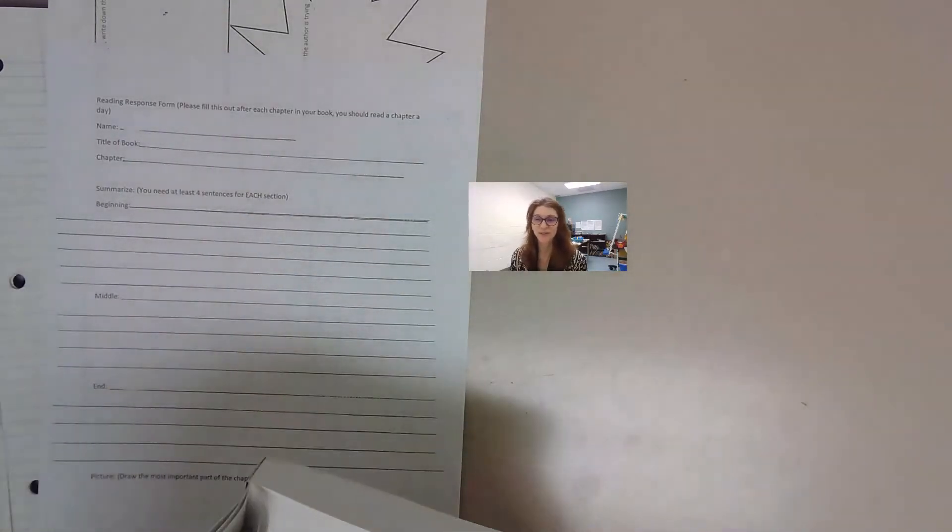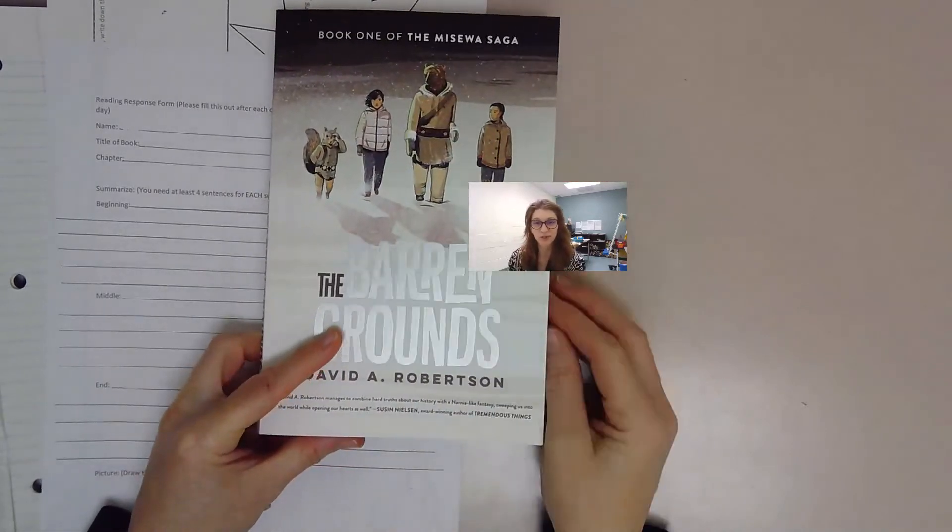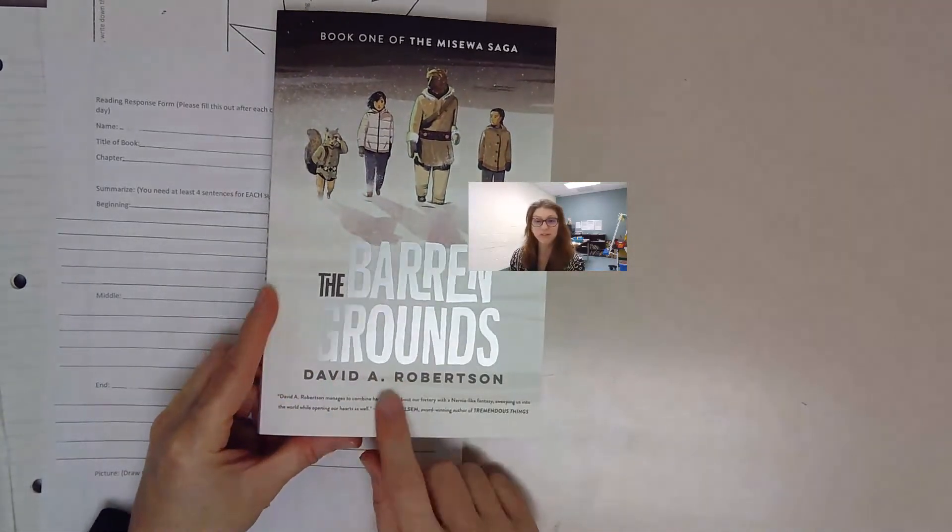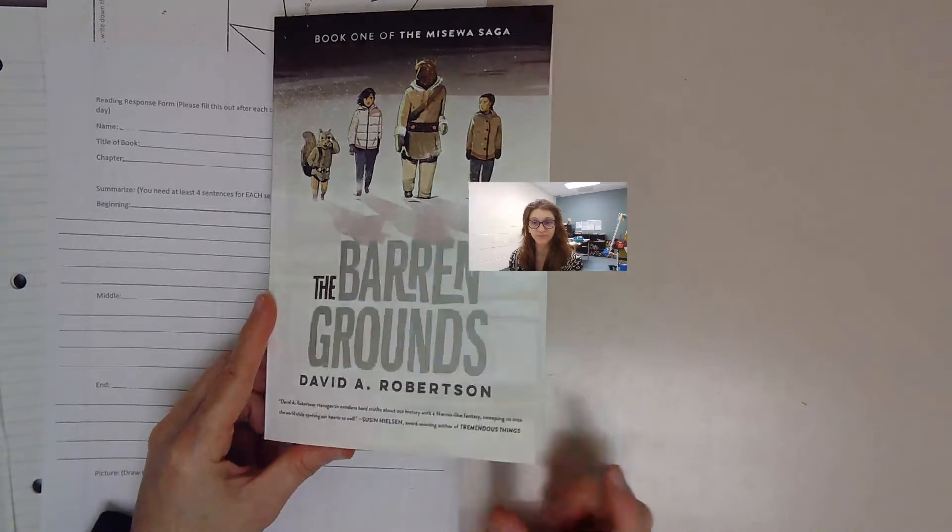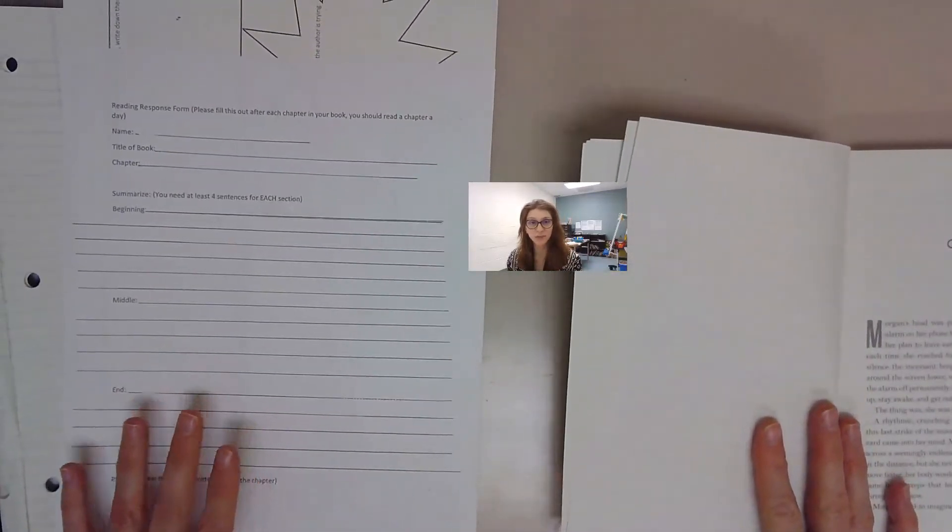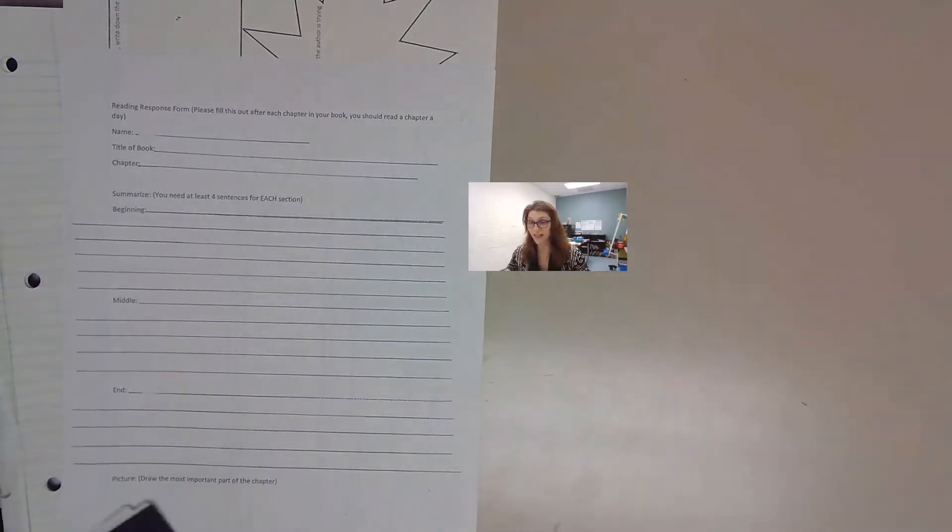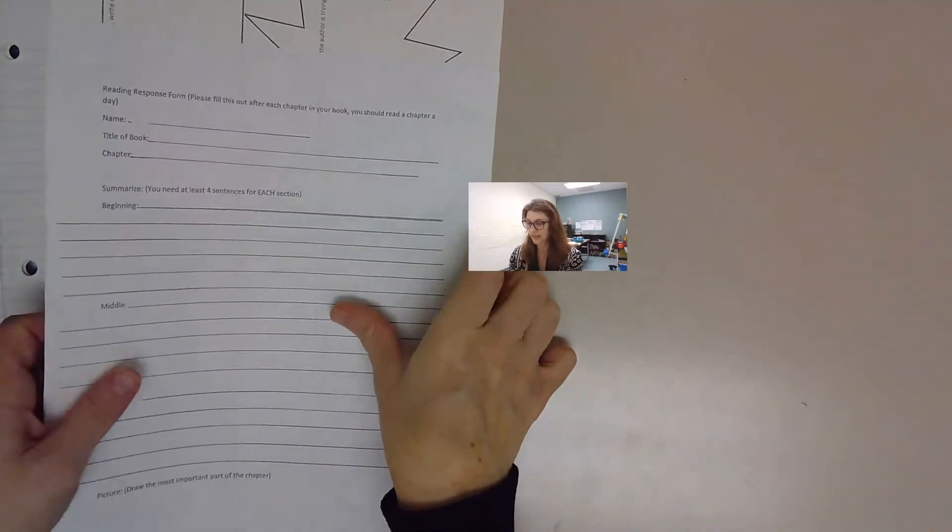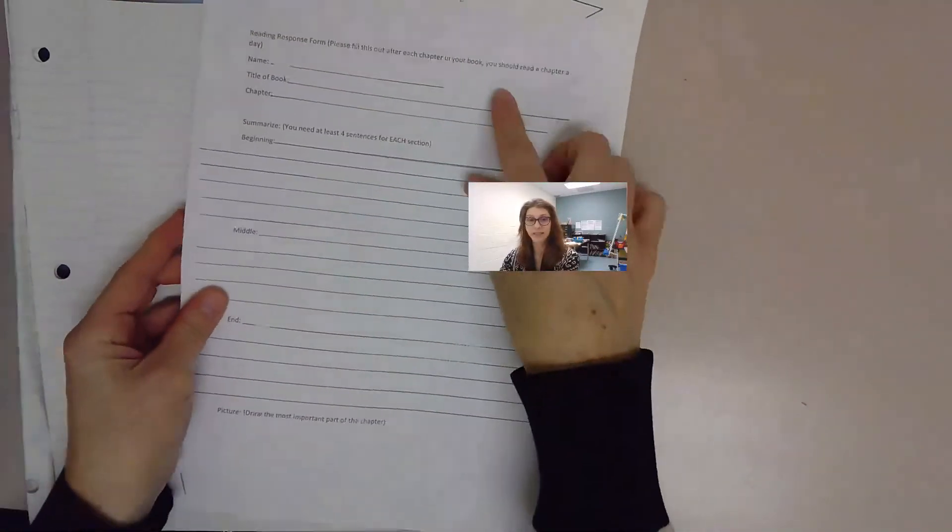Hi guys, we are going to start reading Chapter One of The Barren Grounds by David A. Robertson. After we are done this chapter, the expectation is that you complete this page.